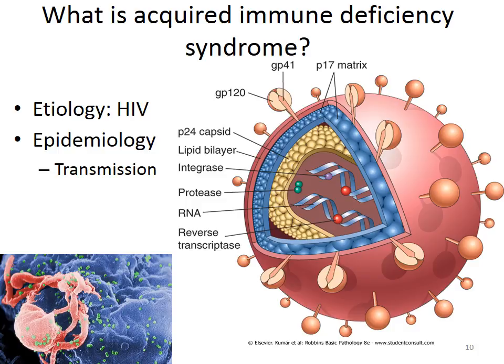On screen you can see a CD4 positive T cell — a helper T cell shown in blue — with the HIV virus physically attached and docked, in the process of infecting this helper T cell. HIV is a retrovirus, meaning it is made of RNA. On the right side of the slide are two copies of the retrovirus, housed in a lipid envelope that is actually derived from the host cell.